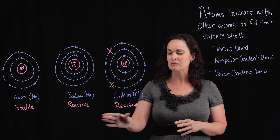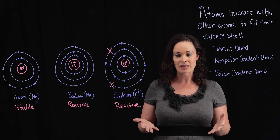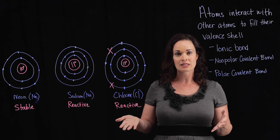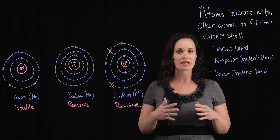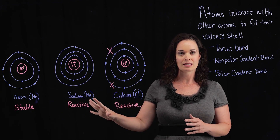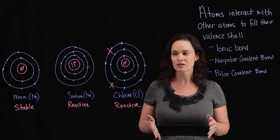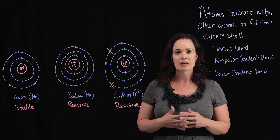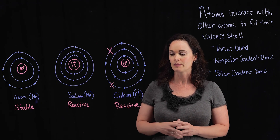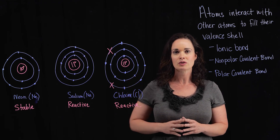If you said that sodium and chlorine are both unstable — or reactive, as we say in chemistry — you were correct as well. If we look at sodium, it has three orbital shells. Its valence shell, the outermost shell, has a single electron, making sodium very unstable. It's missing seven electrons from its outermost shell and will be very likely to react with other molecules to share or exchange electrons.